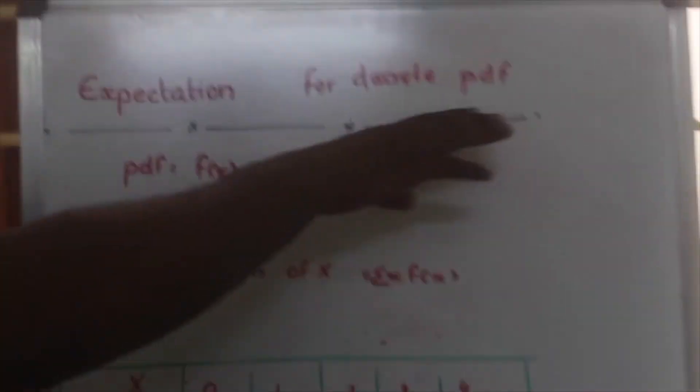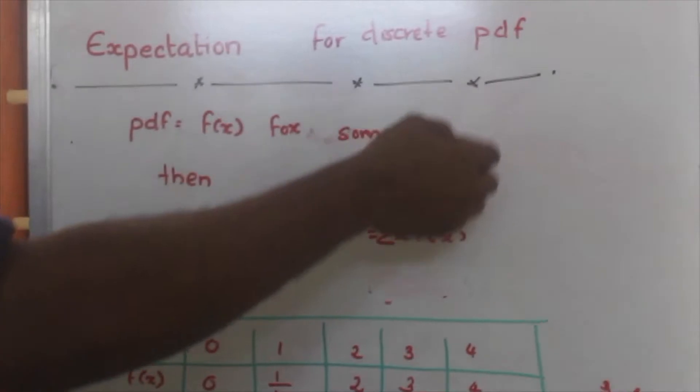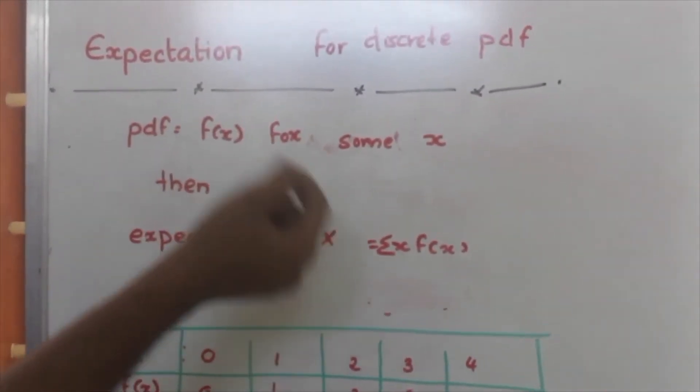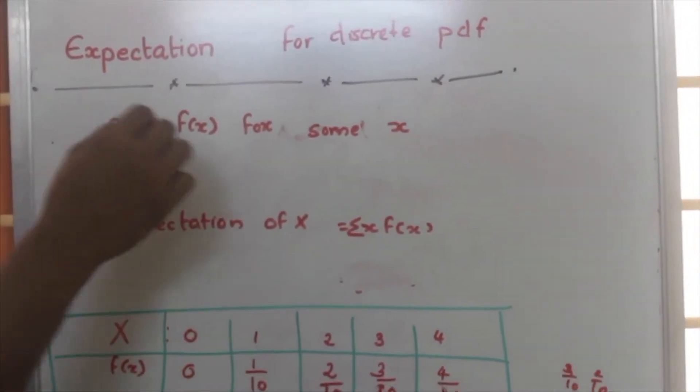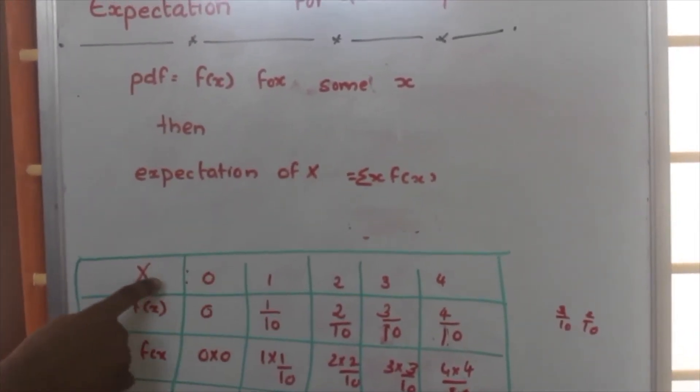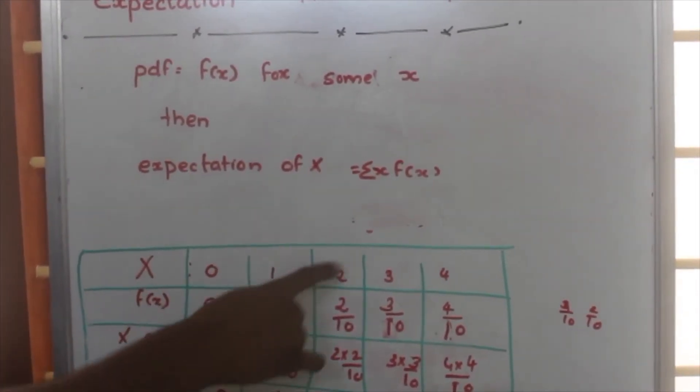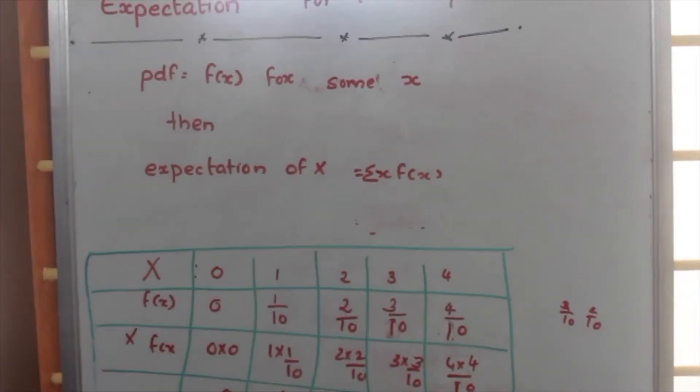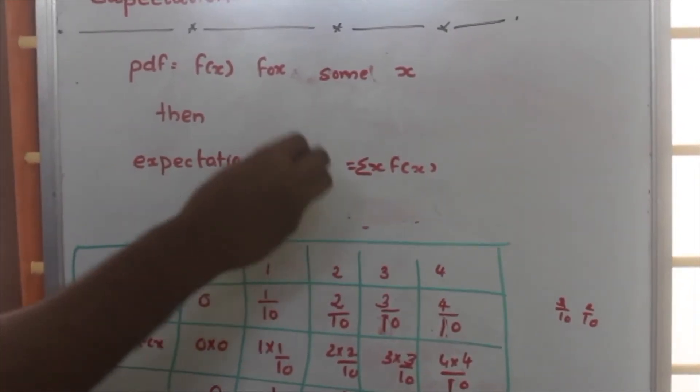Now, discrete pdf means for each x, there will be some value and the x will be in discrete manner. Here, suppose look here, x is equal to 0, 1, 2, 3, 4, etc. That means x is discrete in nature.